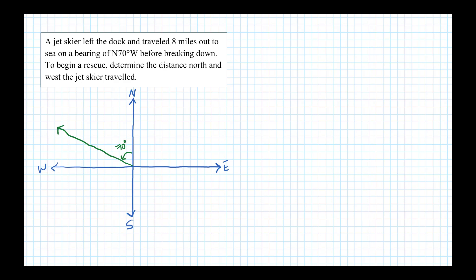All right, we want to find the distance north and west, so if we draw in a right triangle like this, the distance north would be this distance, I'll label that n, and the distance west will be this distance, I'll label that with a w.